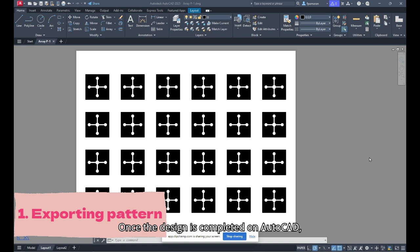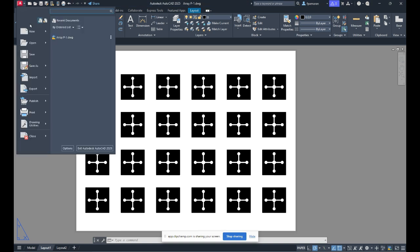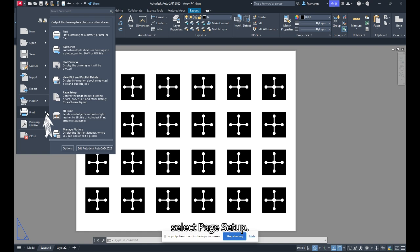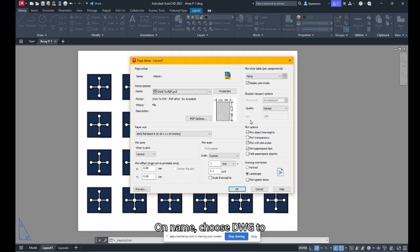Once the design is completed on AutoCAD, we will have to export our design into a PDF file, ensuring the dimensions are correct. First, click on the top left corner on the AutoCAD logo to open the drop-down menu. Click on the arrow next to Print and select Page Setup. Then choose the right page and click Modify. On Name, choose DWG to PDF.